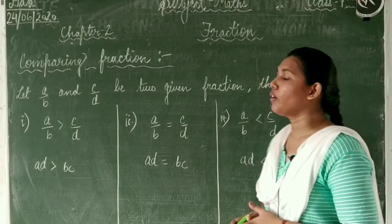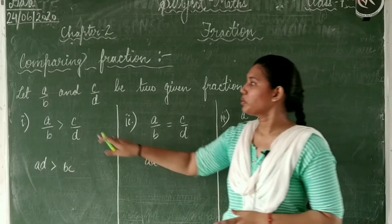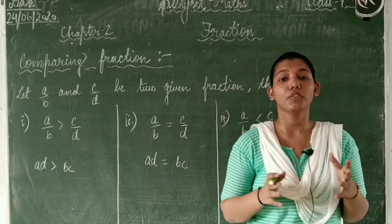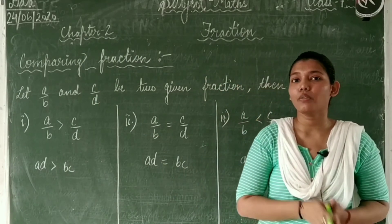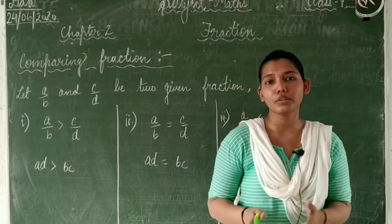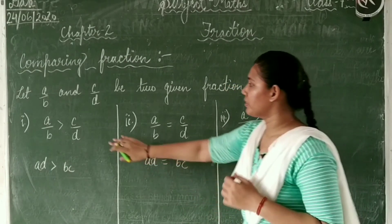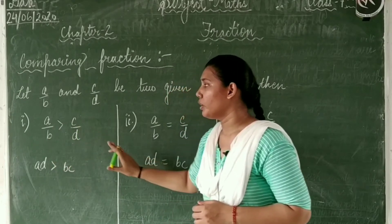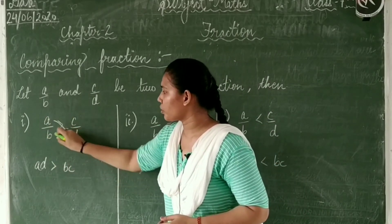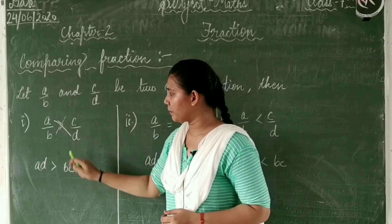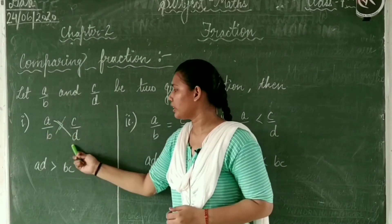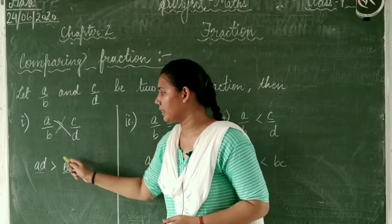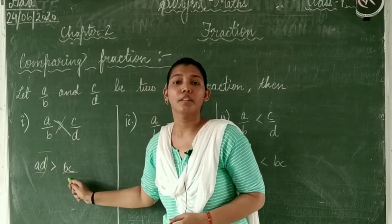Let us discuss how to compare two fractions. Suppose A by B and C by D are two given fractions. We want to know which is greater, which is smaller, and which is equal. First, A upon B is greater than C upon D: we cross multiply — A into D gives AD, and B into C gives BC — so AD is greater than BC.